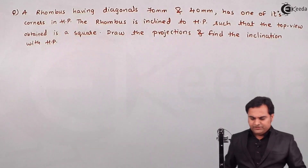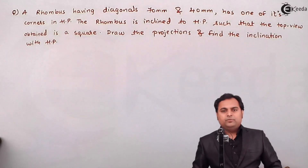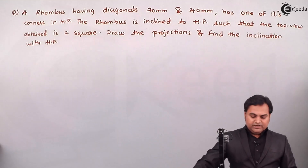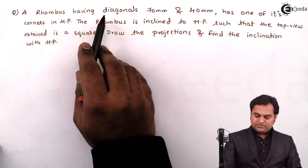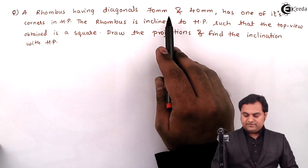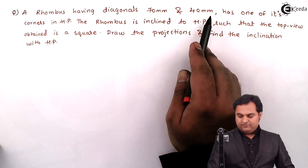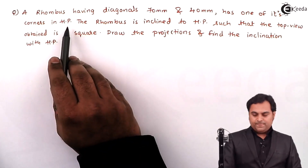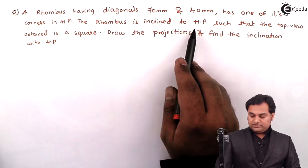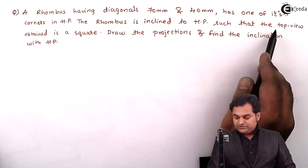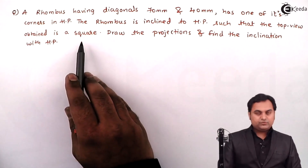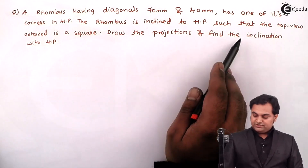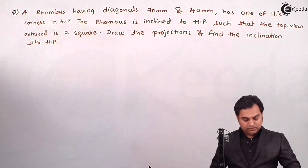Hello friends, in this video we'll see a problem on projection of planes. The question is: a rhombus having diagonals 70 mm and 40 mm has one of its corners in HP. The rhombus is inclined to HP such that the top view obtained is a square. Draw the projections and find the inclination with HP.